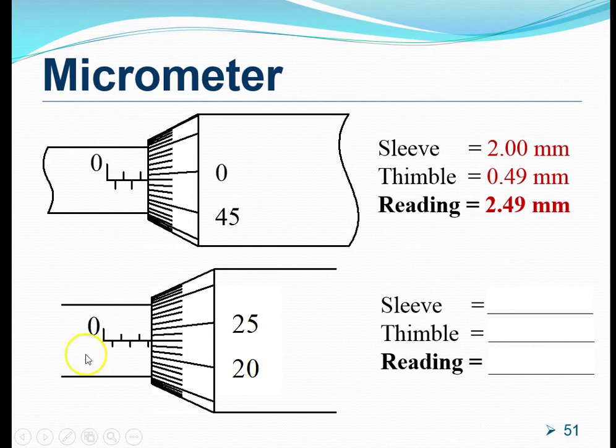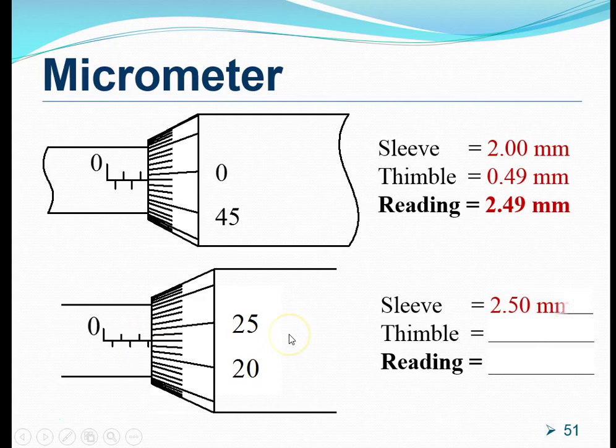For the next one, let's have a look at the main scale reading on the sleeve. The main scale reading should read as 2.5 millimeters. And how about the thimble scale? Take note that it is the 23rd marking, and therefore the thimble scale should read as 0.23 millimeters. Therefore, the length of the object that we are reading should be 2.73 millimeters.